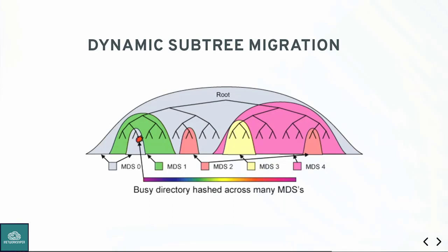The metadata servers dynamically rebalance the metadata tree amongst themselves — though they're not that great at it yet and need a lot of work. Essentially, the metadata server maintains a heat map of access to the metadata by clients, and the hottest directories are migrated to the coldest servers. This happens every 10 seconds. The entire metadata server cluster attempts to maintain a balanced load, and it'll even split and fragment directories, so if you have a directory with millions of files, its workload can be shared by several metadata servers. The balancing algorithm isn't great and runs into thrashing cases.